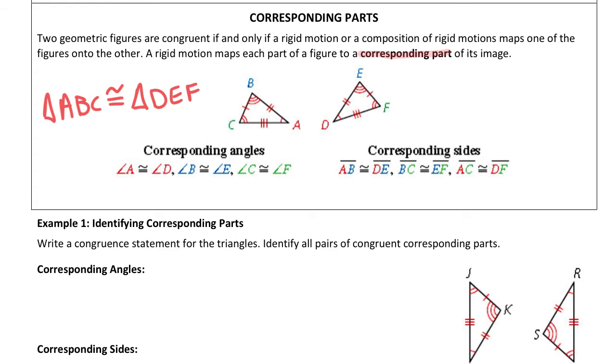The way I do that is, since angle A is congruent to D, they both come first. B is congruent to E, so they both come second. C is congruent to F, so they both come third.